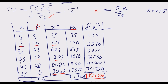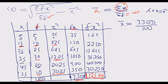We can now find the mean. The mean x̄ equals summation of fx divided by summation of f, which is 3300 ÷ 100 = 33. So the mean is 33.